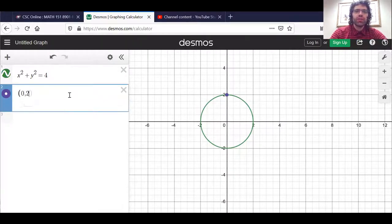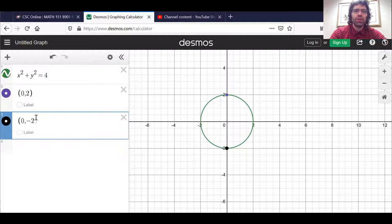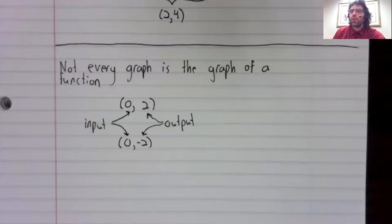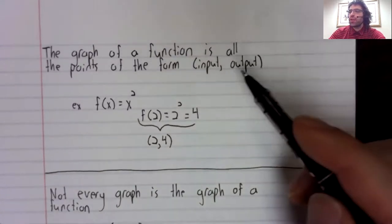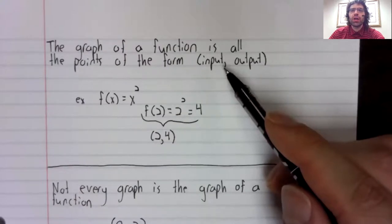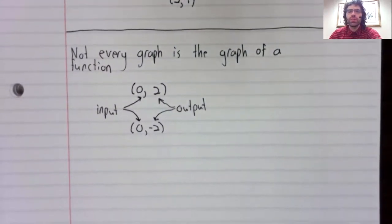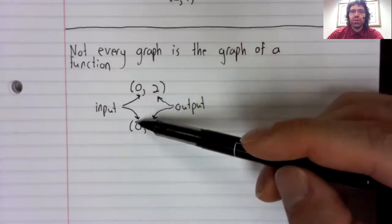Well, let me highlight two points on the graph. (0, 2) is on there. Now remember, if this is a graph of a function, the points have the form (input, output). So in both these cases, zero is the input.